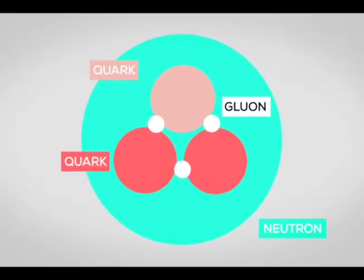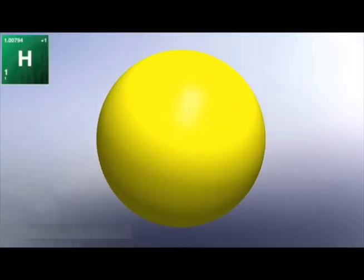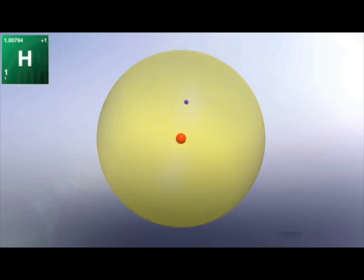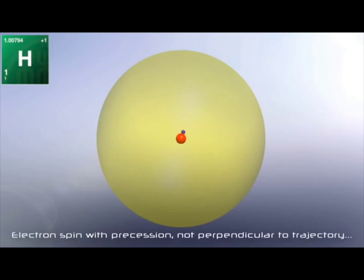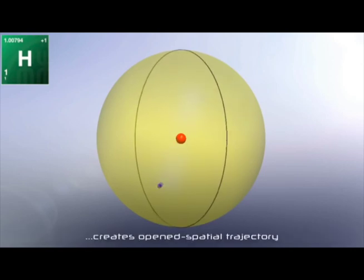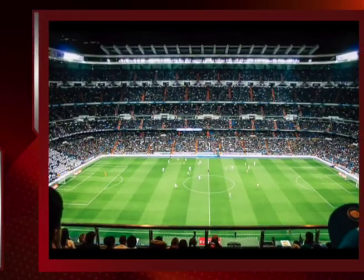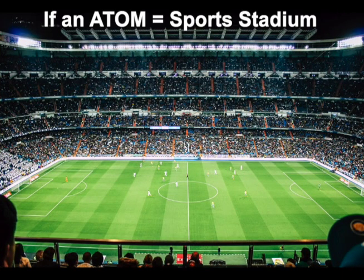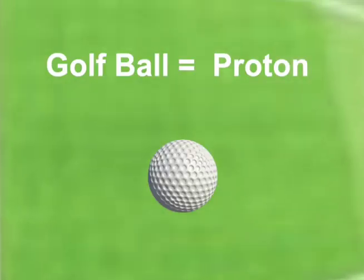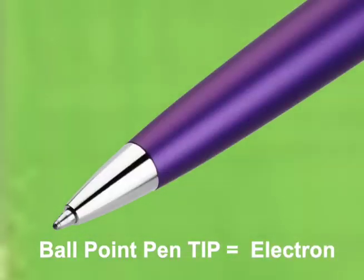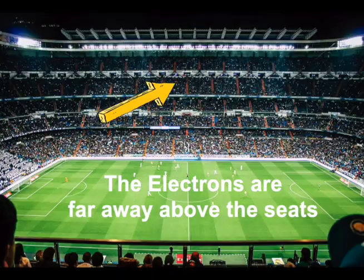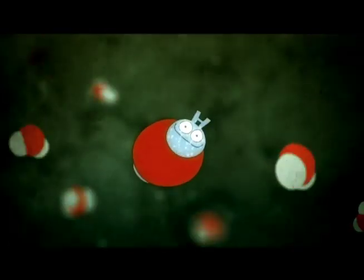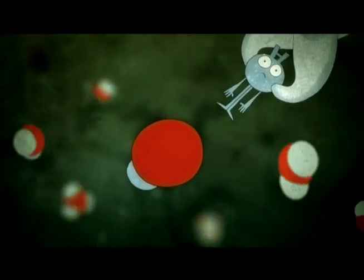In this guess theory, neutrons don't do anything but take up space. What if this is crap? To see why, let's look at a hydrogen atom. Hydrogen has one positive proton in the center. A negative electron spins around or orbits the proton center. If an atom is the size of a sports stadium, then a golf ball in the center is a proton, and the electron is the size of a ballpoint pen tip — far away, fast electrons orbit around the proton center. Most hydrogen atoms don't have any neutrons.